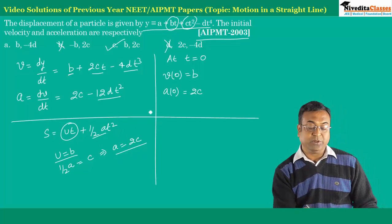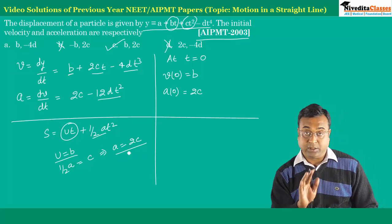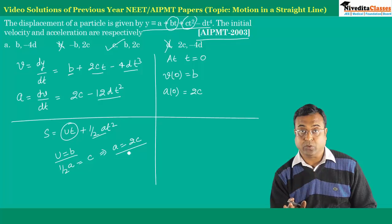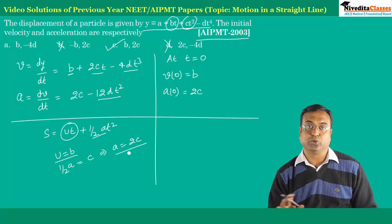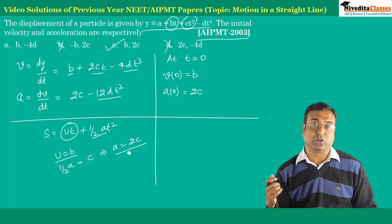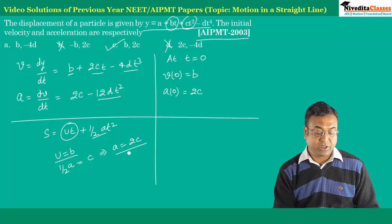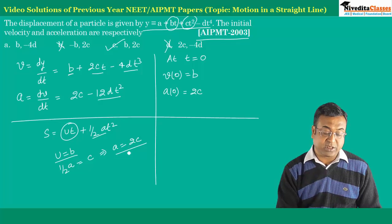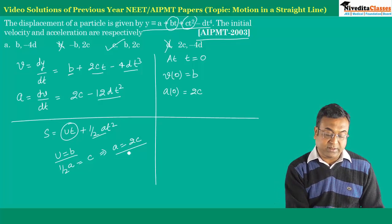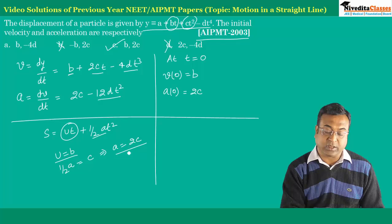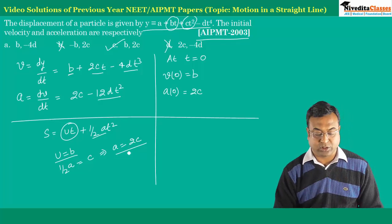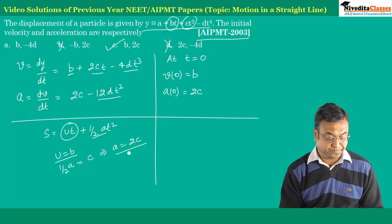So if we have to find initial values, we can also find it instantly using this method. Keep in mind I'm talking about initial. It never happens that a question asks what will be the velocity after ten seconds or acceleration after ten seconds. In that case this won't match. So at t equals zero it will definitely match. This was our standard formula. From this we can find out the answer. Clear?